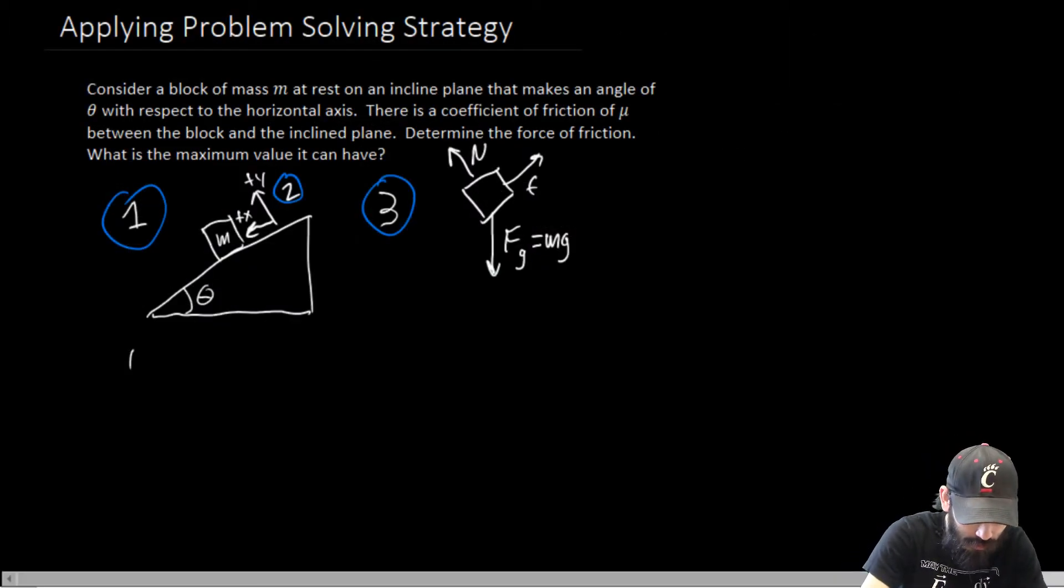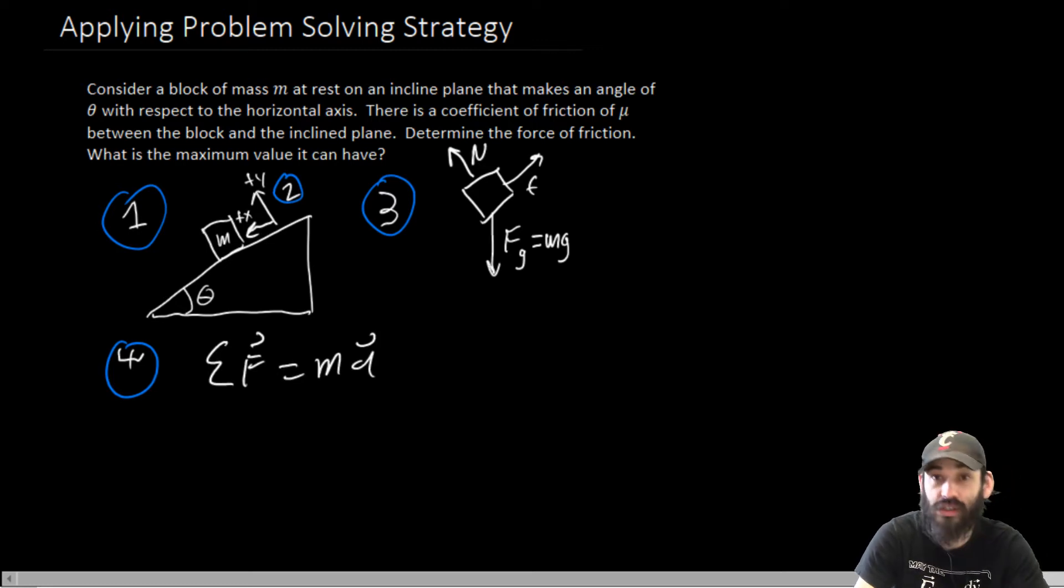And so for step four, we're going to write down Newton's second law in general. This says that the sum of the vector forces is equal to the mass times the vector acceleration. This can be broken into components,